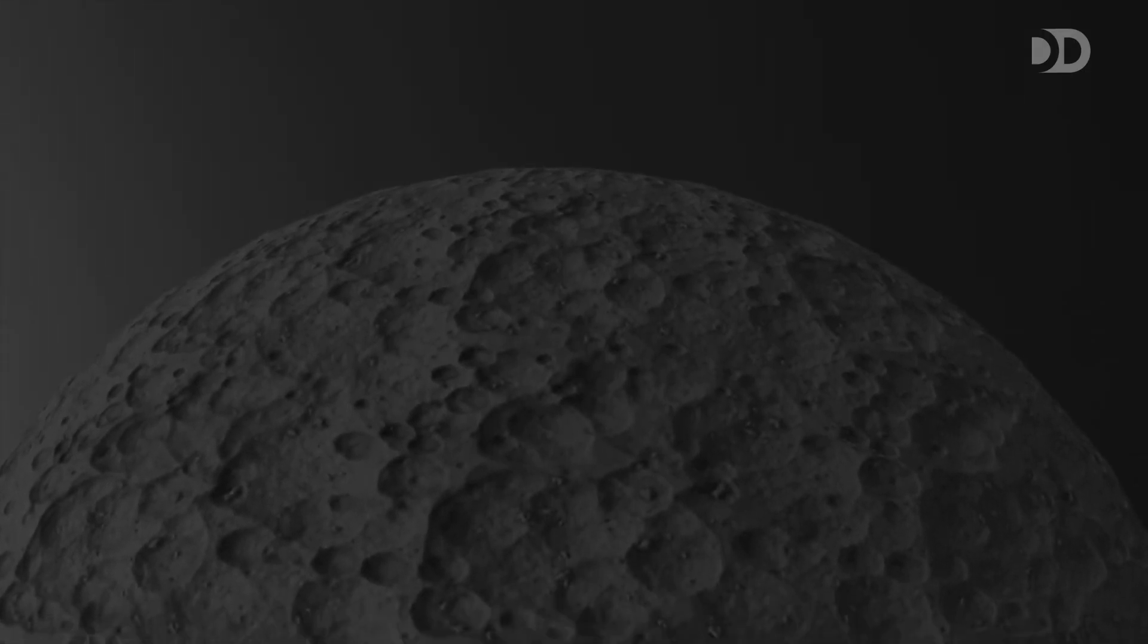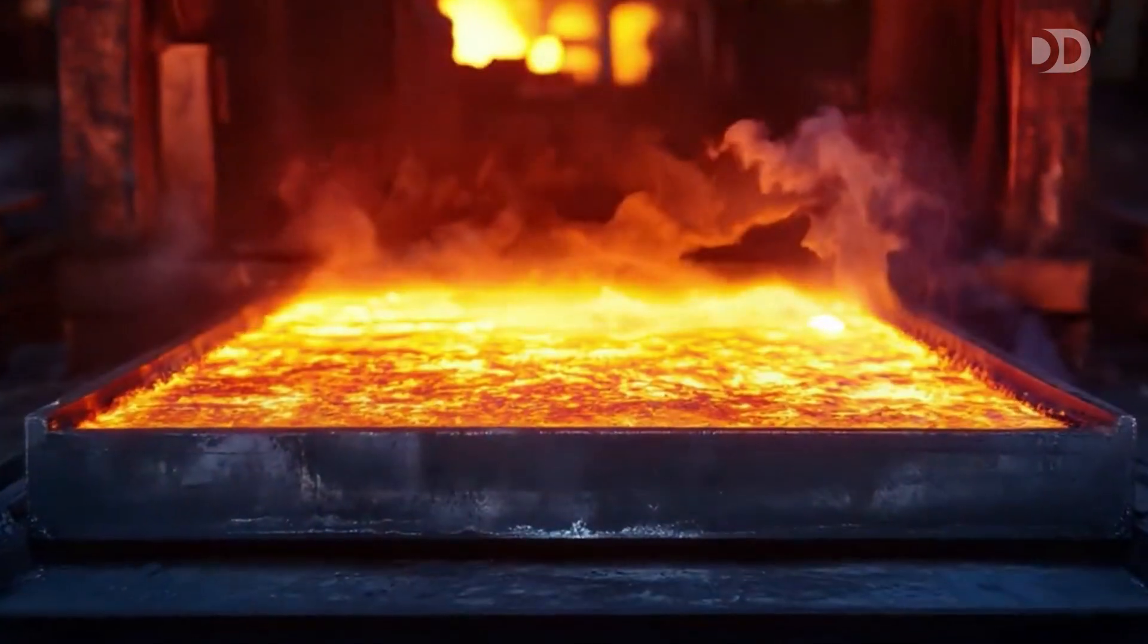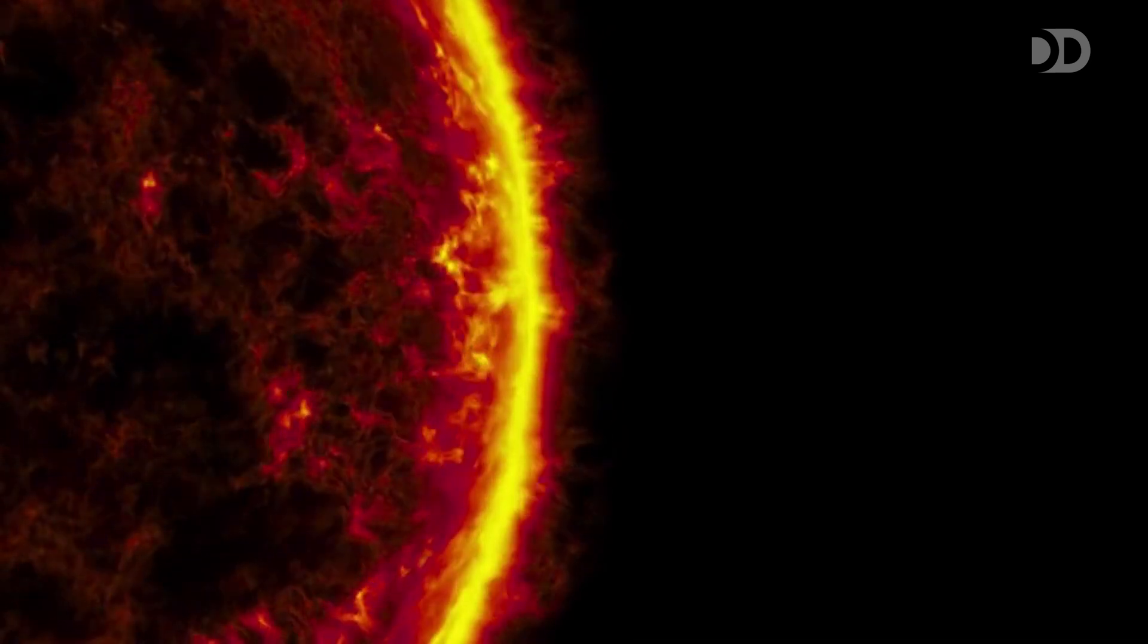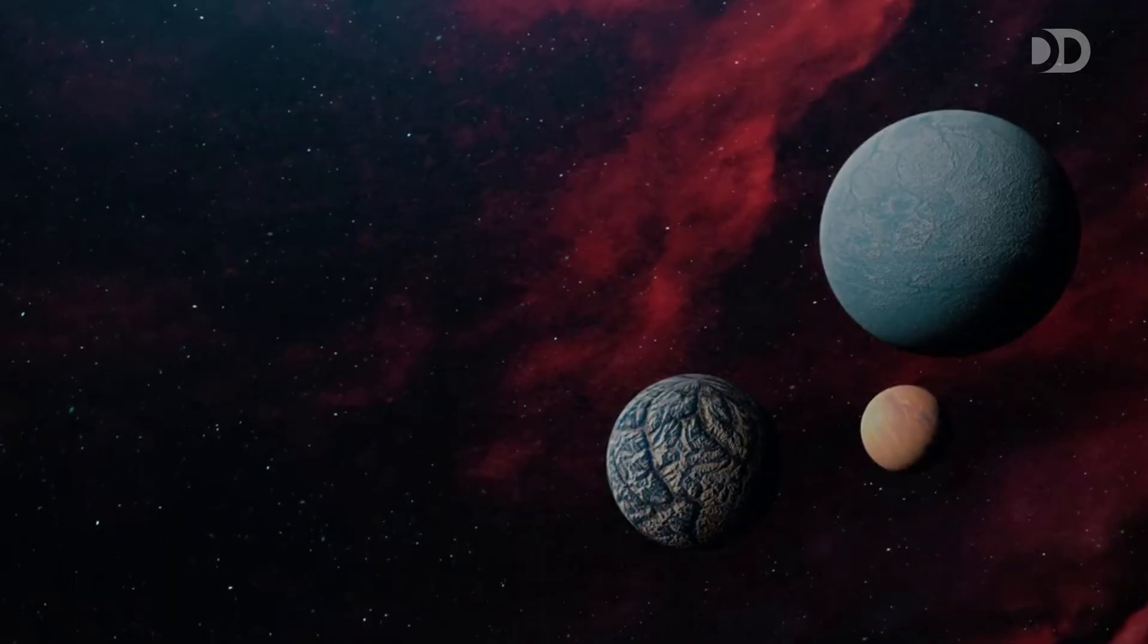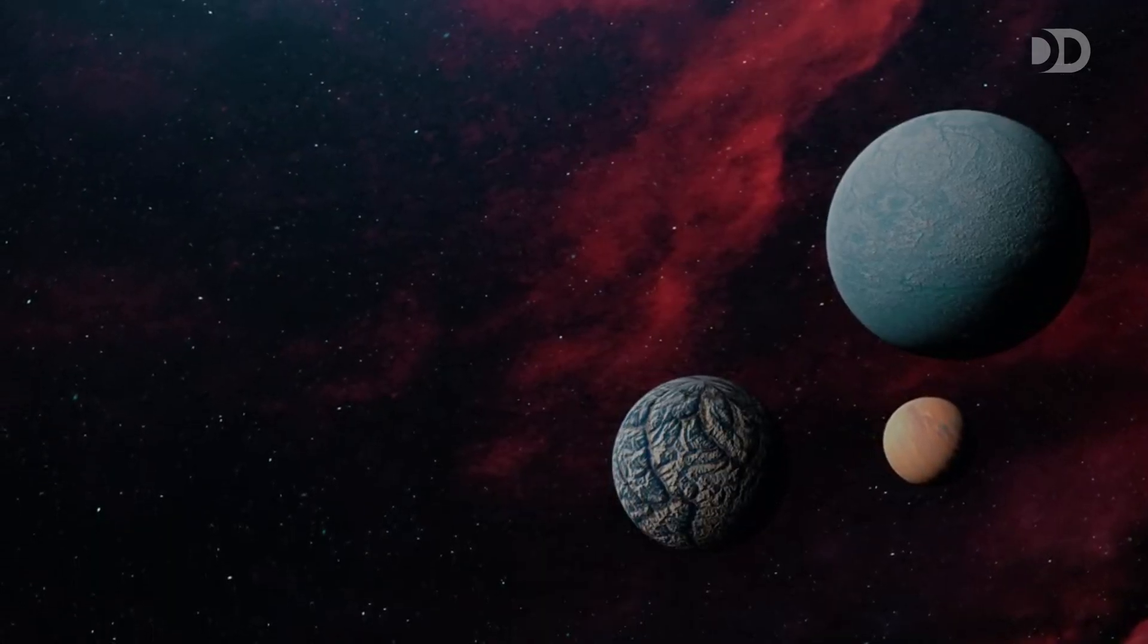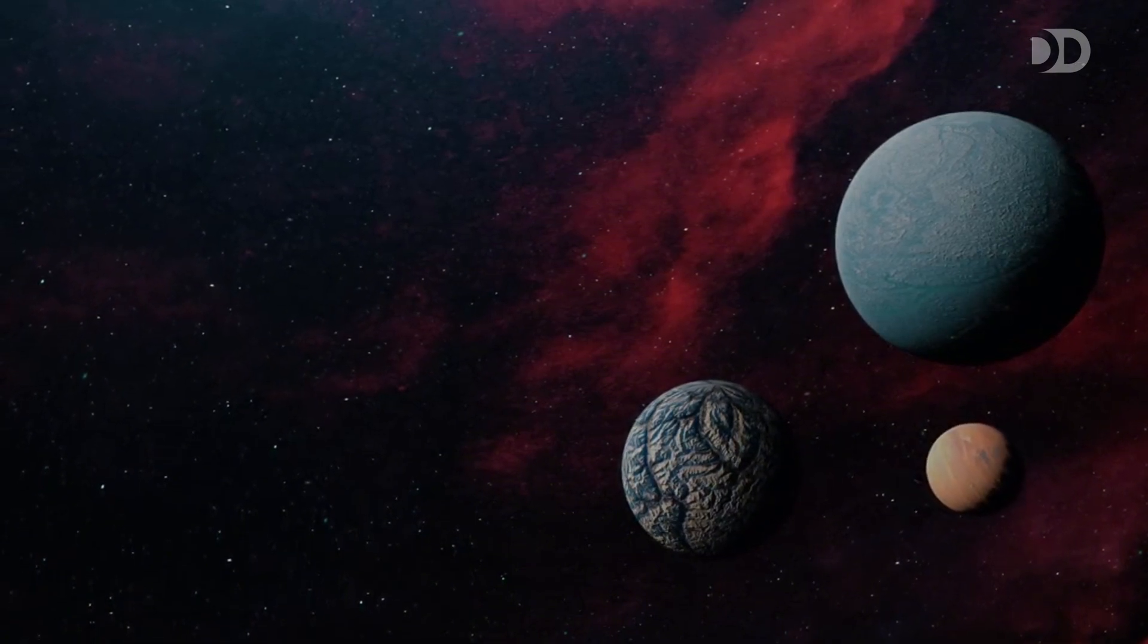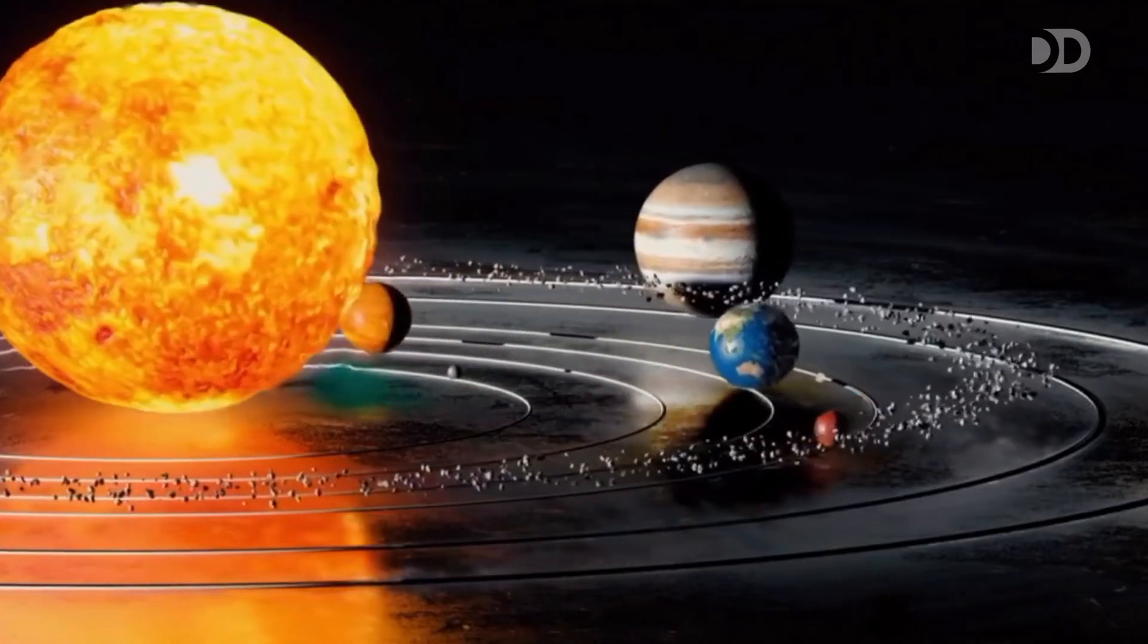During the day, temperatures soar to a blistering 800 degrees Fahrenheit, hot enough to melt lead. The Sun's rays beat down relentlessly, and there's no atmosphere to shield the surface or trap heat. But as soon as night falls, the heat vanishes into space, and temperatures plummet to a bone-chilling minus 290 degrees Fahrenheit. This wild temperature swing is one of the most dramatic in the solar system.